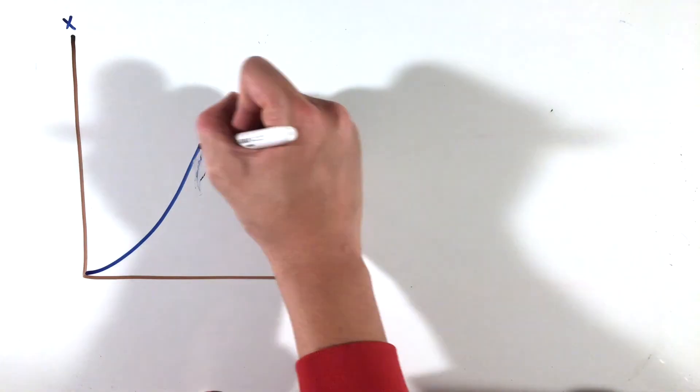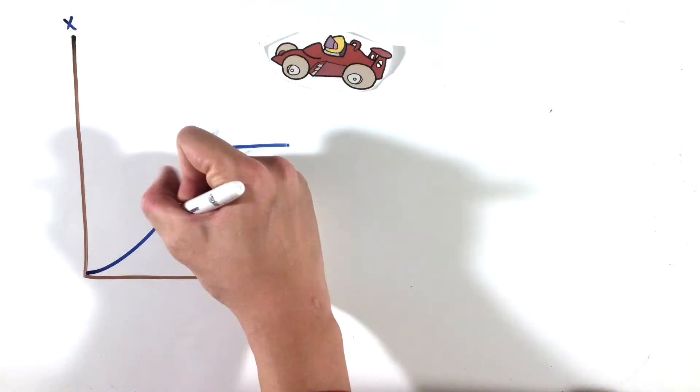Analyzing any single graph is not too hard. Take this position vs. time graph for, say, a car traveling on a straight road, for example.